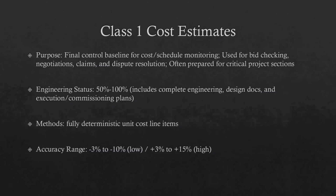Class 1 estimates form the final control baseline against which all actual costs and resources are monitored for budget variations. They also support bid checking, vendor and contractor negotiations, and claim evaluations or dispute resolution. Class 1 estimates involve the highest degree of deterministic estimating methods and require significant effort, prepared in extreme detail and usually focusing only on the most critical project areas. All estimate items are unit cost line items based on actual design quantities. Typical accuracy ranges are minus 3% to minus 10% on the low side and plus 3% to plus 15% on the high side.